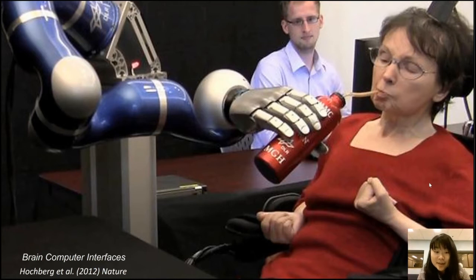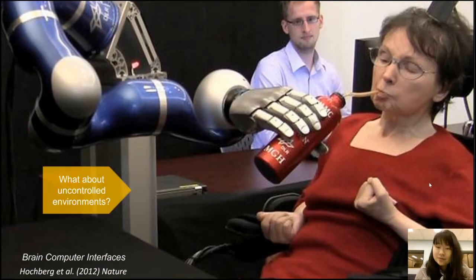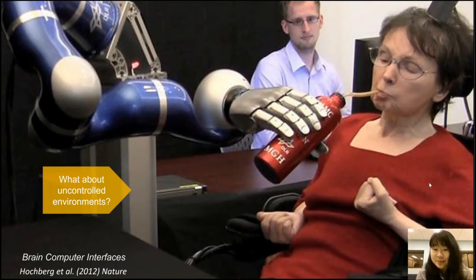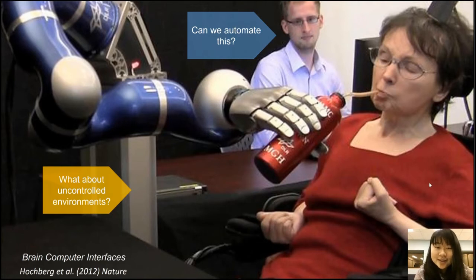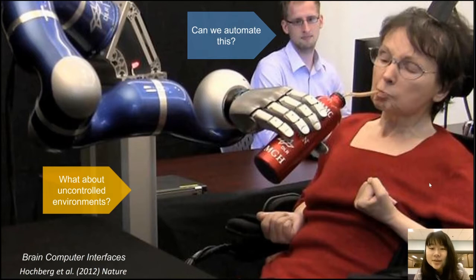As amazing as I thought this was, it also got me thinking about a couple of questions. Firstly, what about uncontrolled environments? This is in a very well-controlled laboratory setting — everything was prepared just for this experiment. Would Cathy be able to take her device home and perform tasks as she has done in this demonstration? Secondly, there's a lot of work that goes into every kind of research experiment, and a lot of it is manual, so there was probably a lot of fine-tuning done. So how can we automate as much of this research and setup for each individual subject as possible?